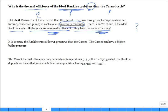Some other student may write this. They say, it is because the Rankine operates at lower pressures than the Carnot. The Carnot can have a higher boiler pressure than the Rankine. Do you agree with that? Is that the reason why the Rankine has a lower thermal efficiency than the Carnot?